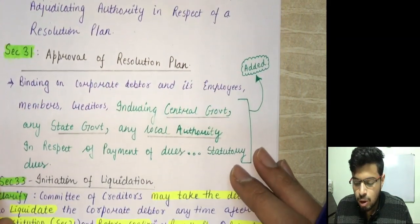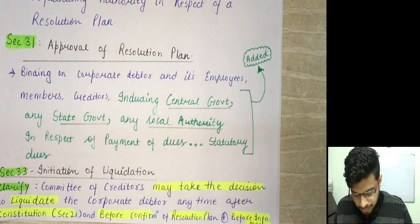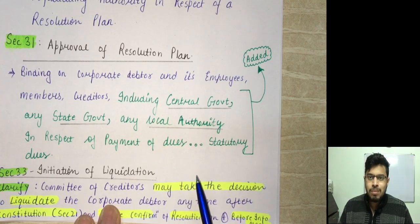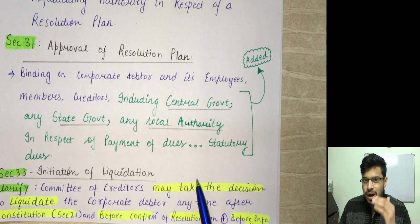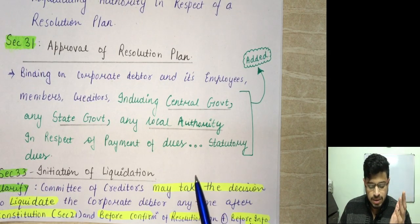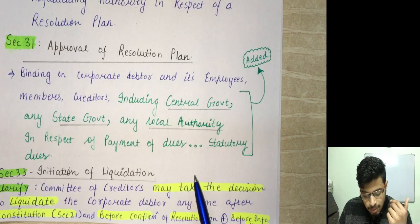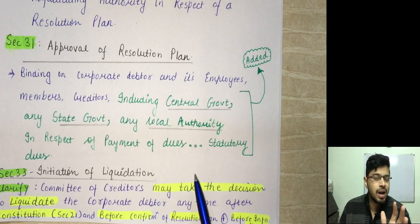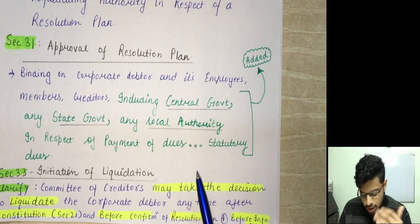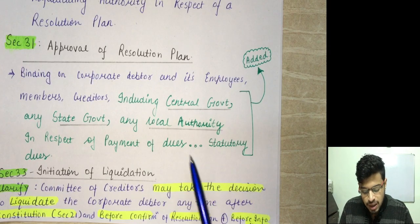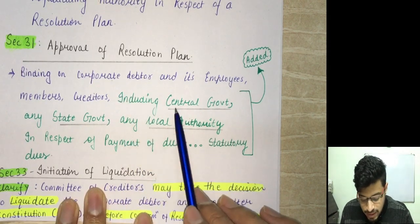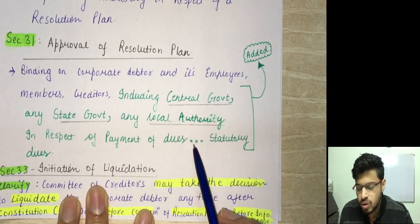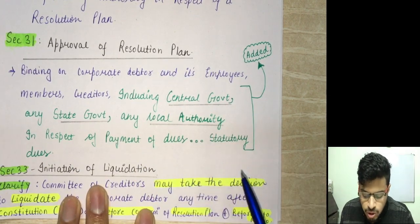Section 31 deals with approval of resolution plan. An approved resolution plan is binding on the corporate debtor, employees, members, and creditors. This amendment clarifies that it shall also be binding on the Central Government, state government, or any local authority in respect of payment of dues which are statutory dues. So the binding nature has been clarified to include government statutory dues.